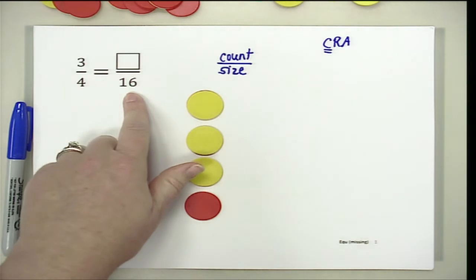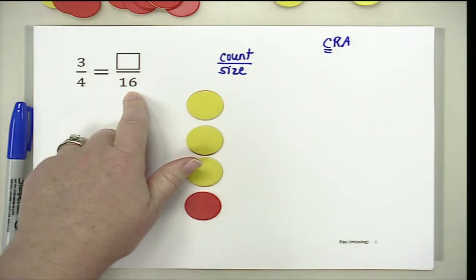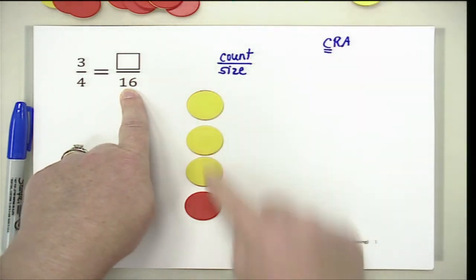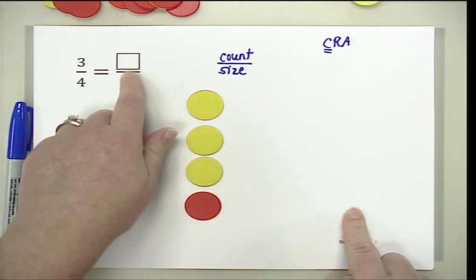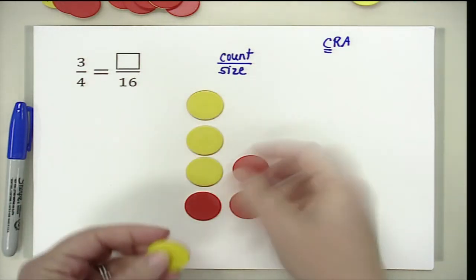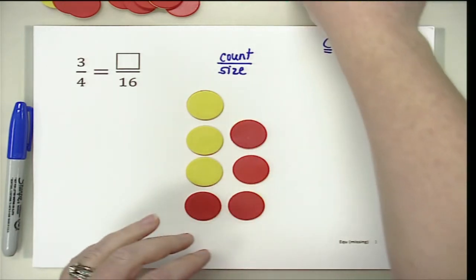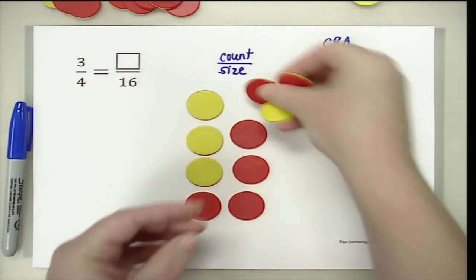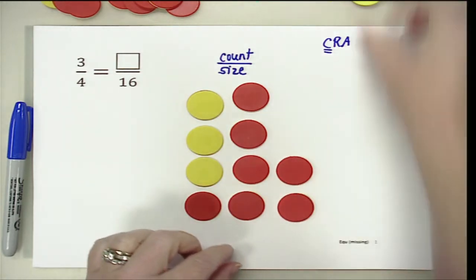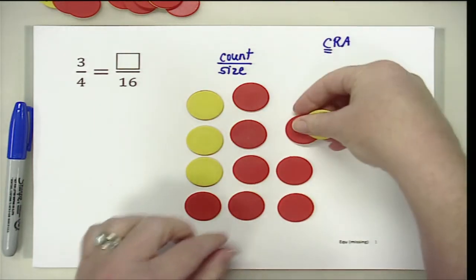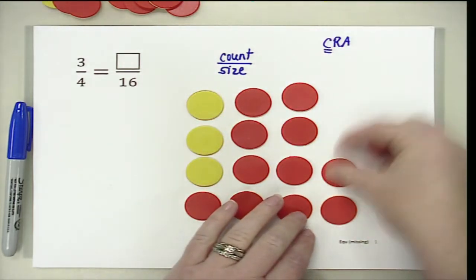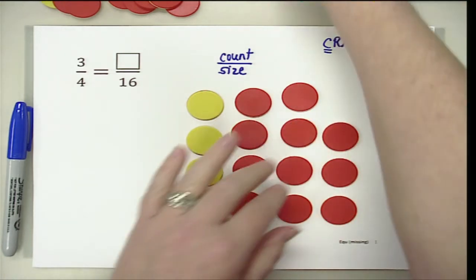Now it looks like I need to find an equivalent fraction where the size is 16. So I am going to change my size to 16 to figure out what my new count is going to be. I have 4 here, so I am going to keep adding until I have a new size of 16: 4, 8, 12, and 16.